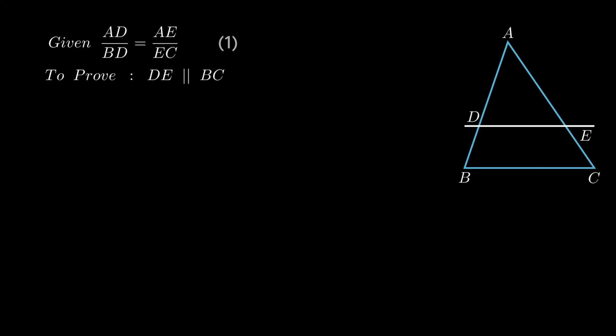We need to prove segment DE is parallel to segment BC. To prove this we need to consider a point F close to point E such that segment DF is parallel to segment BC.